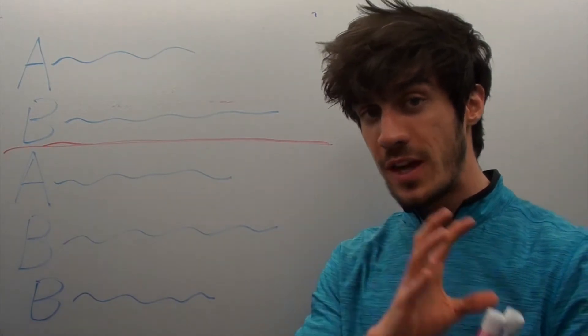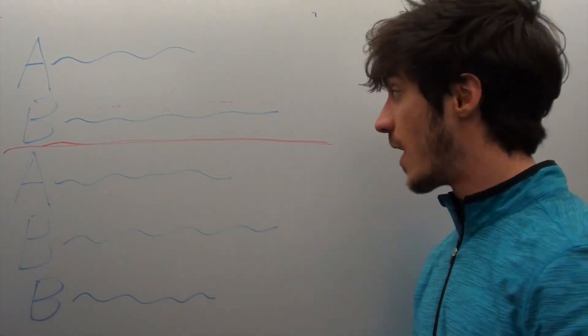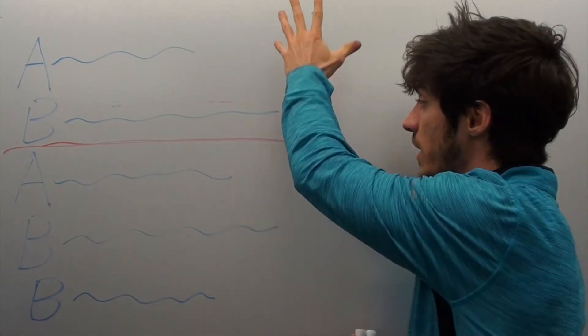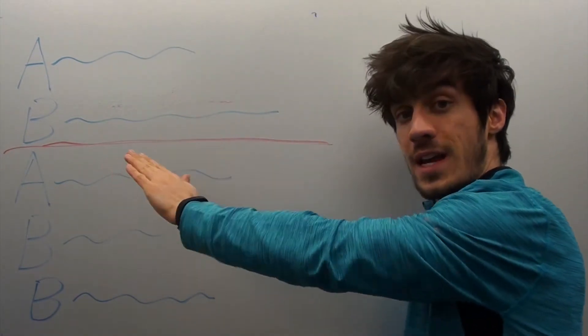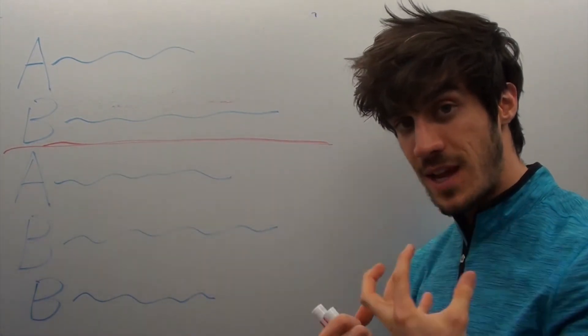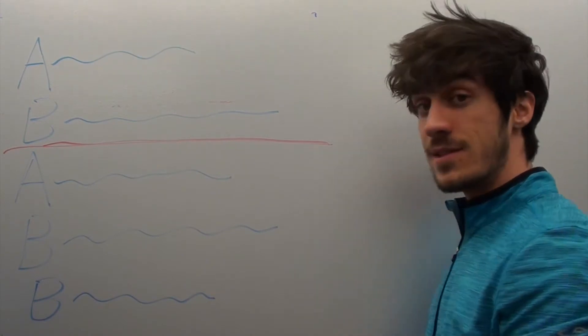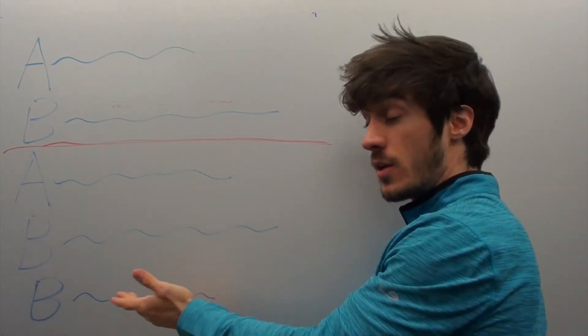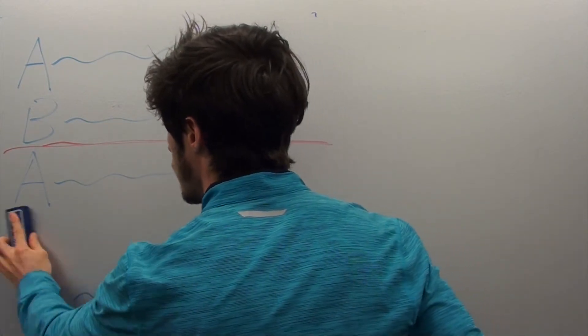So remember, as you're thinking about the ways to structure your song, think about asymmetry. Think about, can I run a line through the middle of any one of my sections, and is it the same on both sides? If it is, consider adding a line. Consider taking a line out. Coldplay could have done that with this chorus as well.